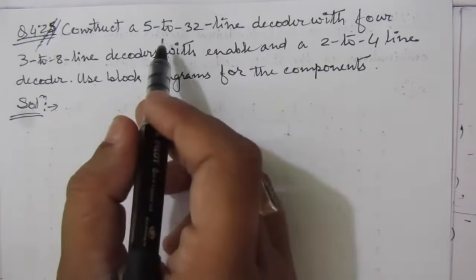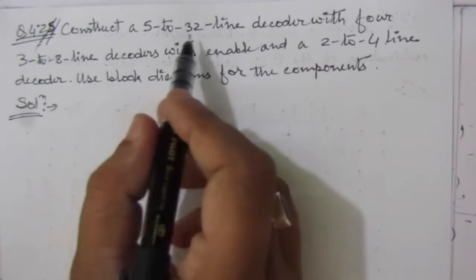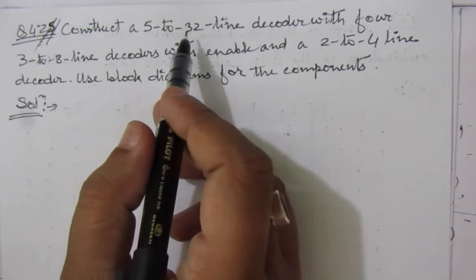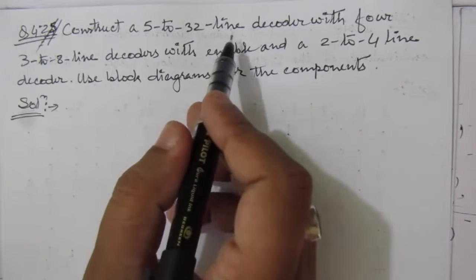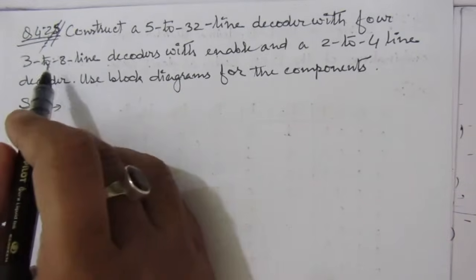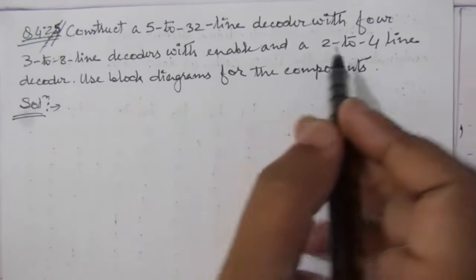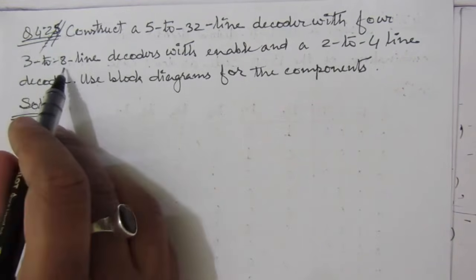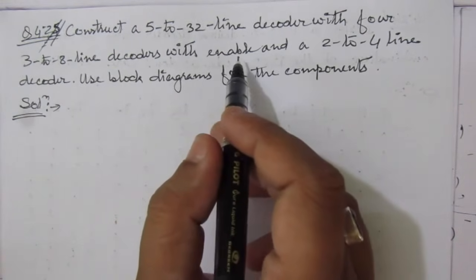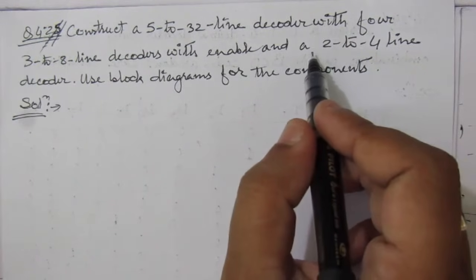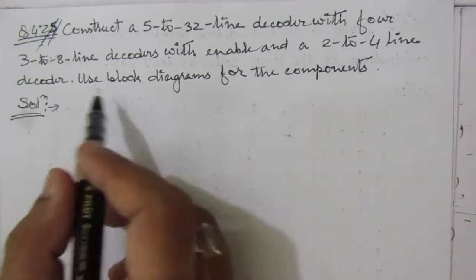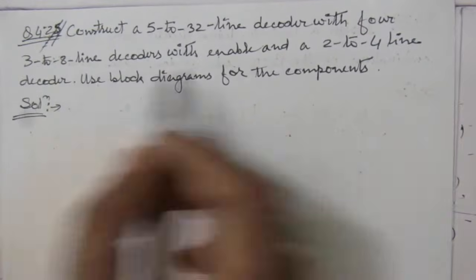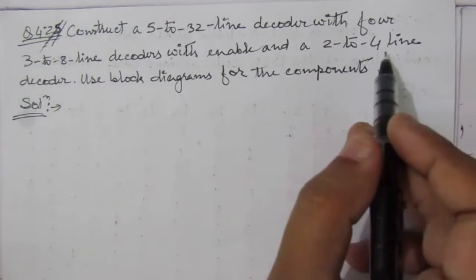The problem is: construct a 5-to-32 line decoder — that means 5 input lines and 32 output lines — using 4 three-to-8 line decoders with enable and one 2-to-4 line decoder. We have to use 4 decoders with 3 input lines, 8 output lines, and an enable input. We also need to mention the enable line and use block diagrams for all components.